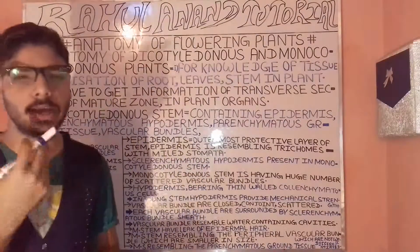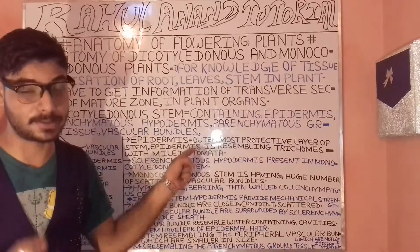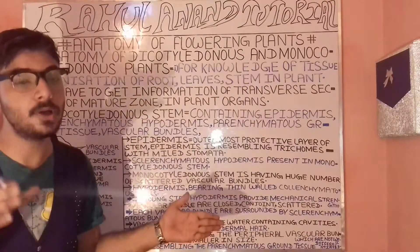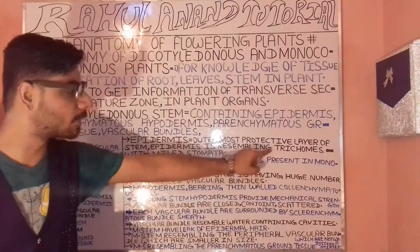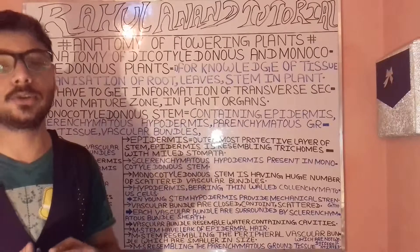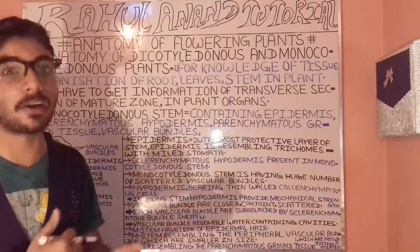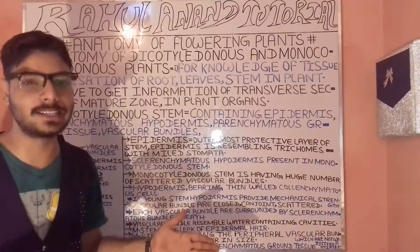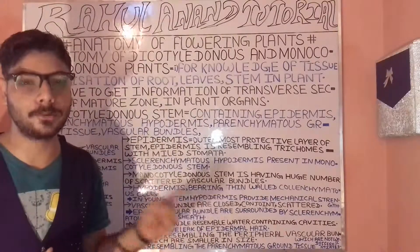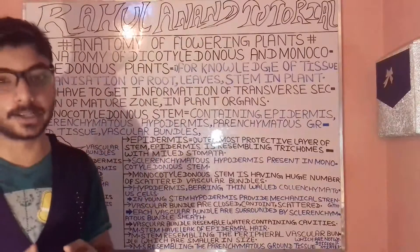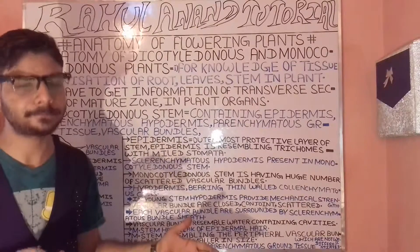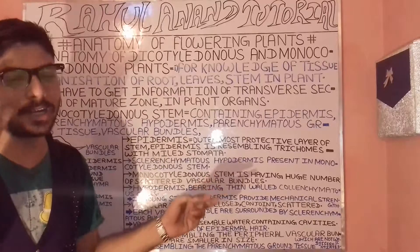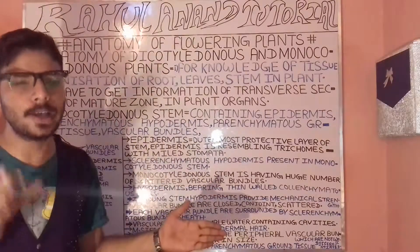Regarding the epidermis: it will be bearing stomata and is particularly covered by the cuticle. The cuticle resembles a thorn-like structure found in the cactus plant. The epidermis is the outermost protective layer, playing an important role in providing support and mechanical strength.